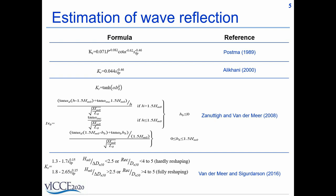In 2008, Zanuttigh and Van der Meer suggested that the slope below the berm is important in estimating the wave reflection from berm breakwaters and suggested this formula which is shown here.